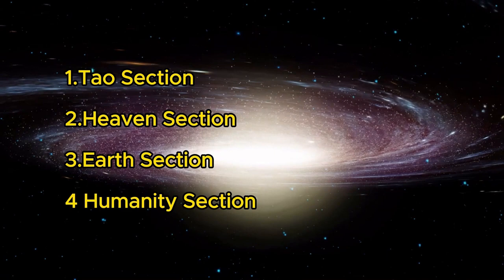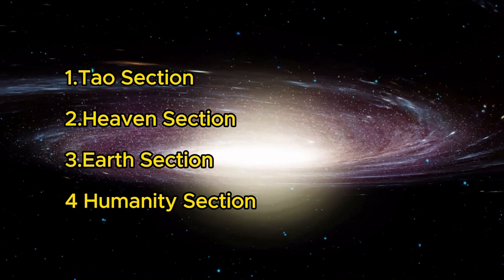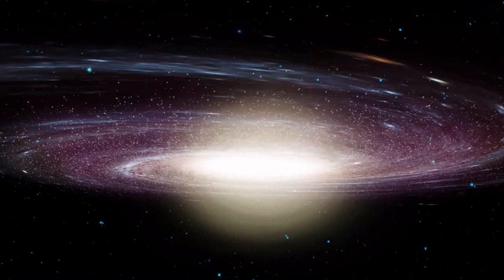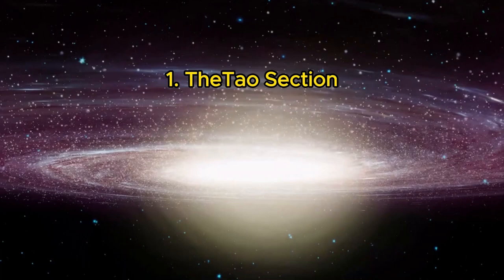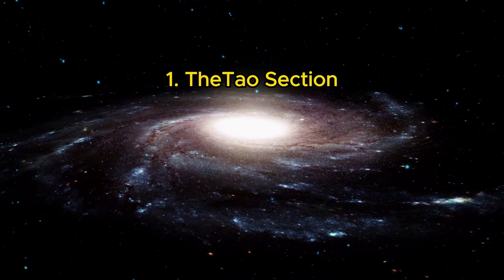Here, I will first provide a brief introduction to each of these four sections, and later we will delve into each section in depth chapter by chapter to explore these contents. 1. Tao Section. This section constitutes the core of the Tao Te Ching, delving into profound inquiries about the origin of the universe and all its entities, addressing the ultimate questions that have perpetually captivated human contemplation.